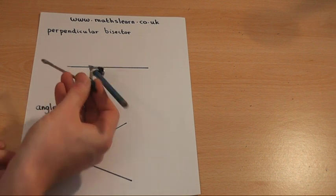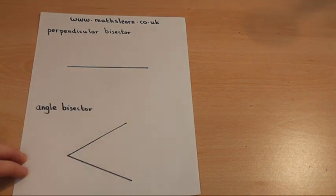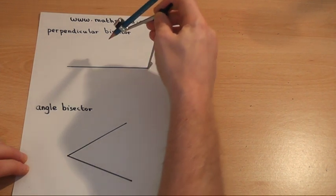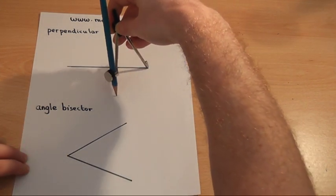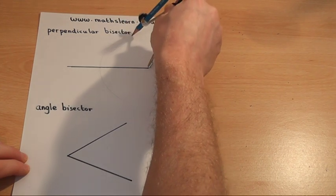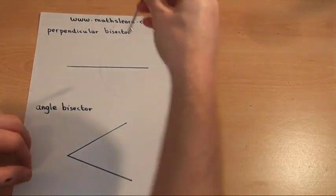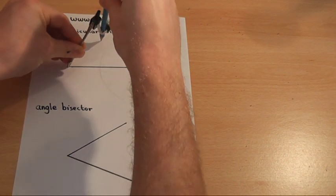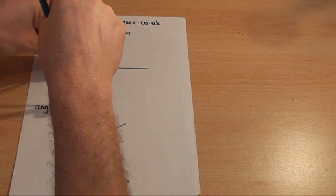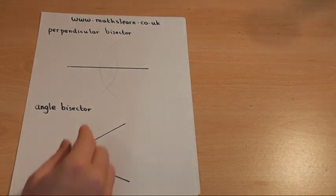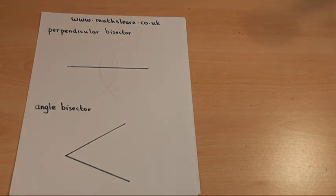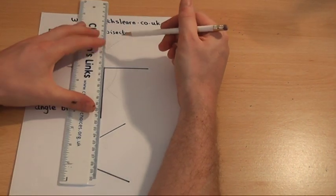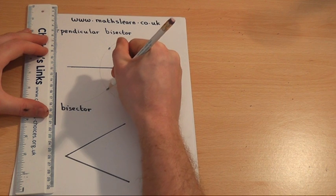You then go to one edge of the line and draw a nice big arc. Then go to the other side of the line and draw another nice big arc, achieving the two arcs to cross each other.